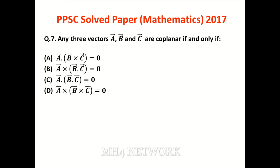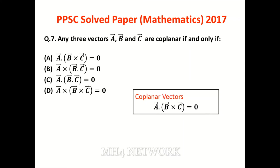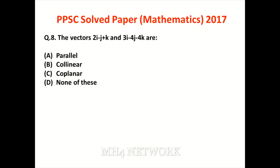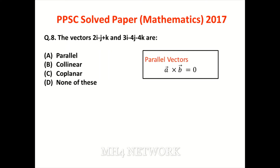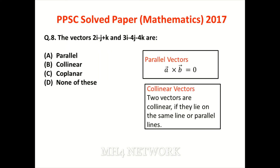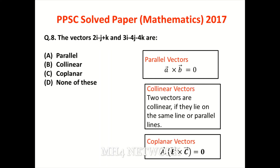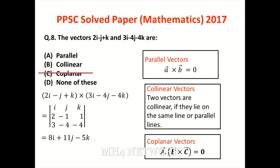Any three vectors are coplanar if and only if their scalar triple product is zero. Scalar triple product jo zero aaye, woh vectors coplanar hote hain — ek hi plane mein hote hain. Option A is the correct answer. The vector R — parallel vectors ka cross product zero ke equal hota hai; colinear vectors same line pe exist karte hain. Coplanar teen vectors ko kaha jaata hai. Cross product determinant se solve karein — simplify karne pe yeh vector banta hai jo colinear bhi nahi — option D is the correct answer.